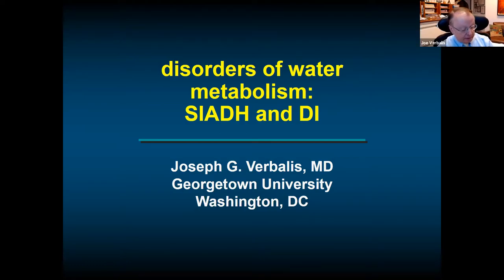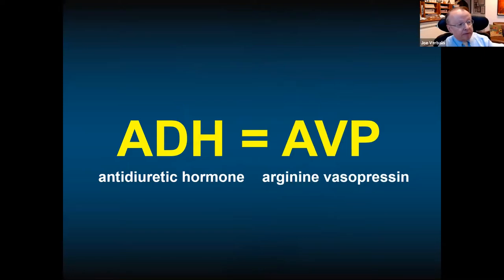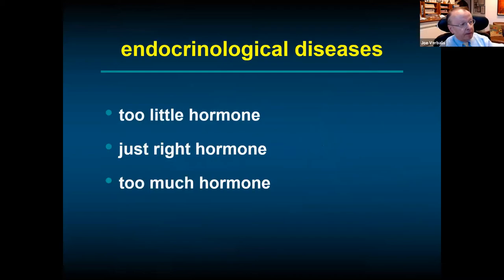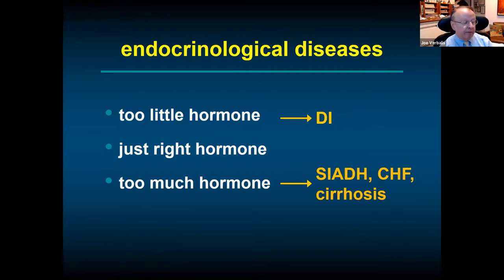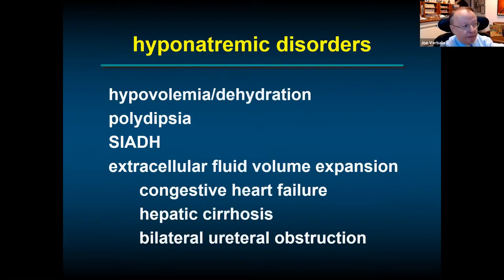Disorders of water metabolism include SIADH and diabetes insipidus. ADH and AVP are the same thing — different names for the same hormone, arginine vasopressin, also called antidiuretic hormone. Like other endocrine diseases, these disorders arise from too little or too much hormone. Too little hormone results in diabetes insipidus; too much results in SIADH, as do conditions with elevated AVP like heart failure and cirrhosis.